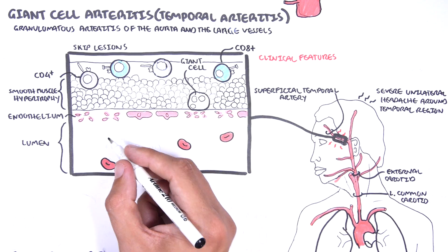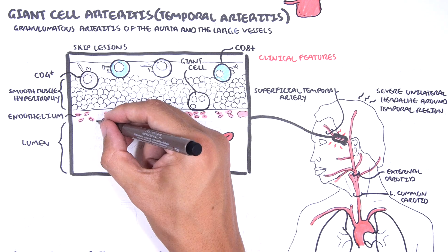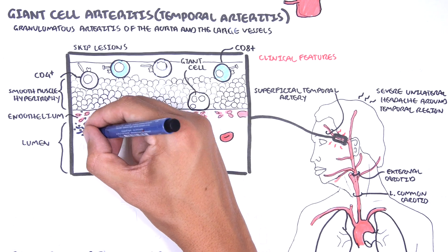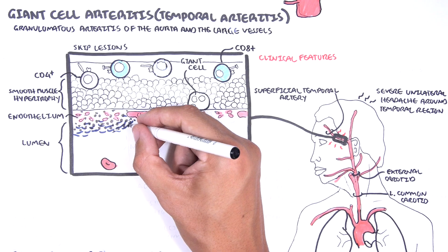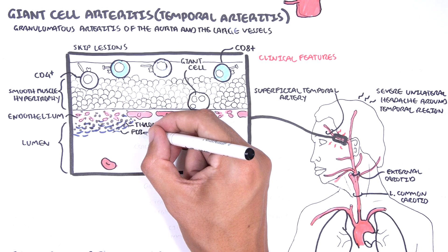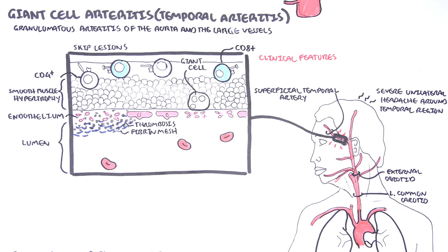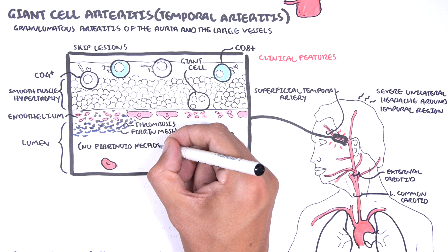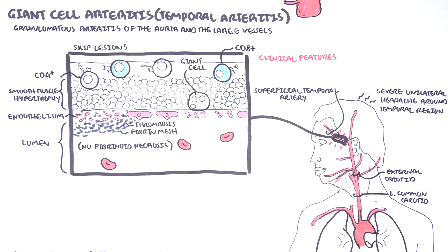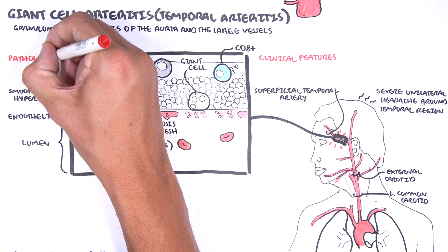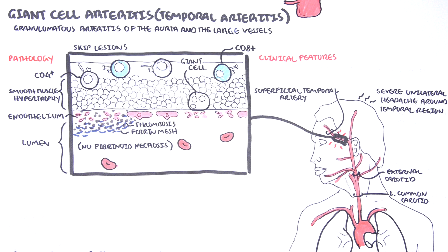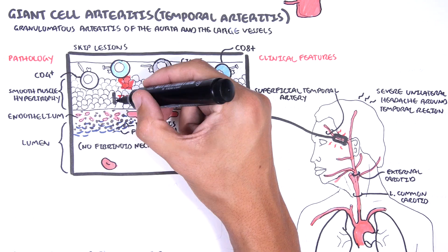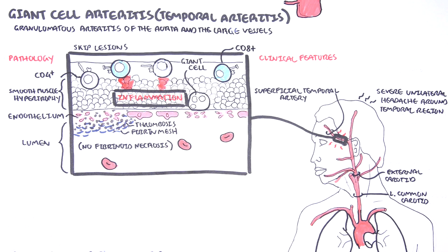When there is any potential injury to the blood vessel, especially to the endothelial layer, hemostasis occurs, which includes thrombosis and fibrin mesh. However, in giant cell arteritis, on histopathology, there is no evidence of fibrinoid necrosis. This is because fibrinoid necrosis is a histopathological term limited to small blood vessels. The T lymphocytes, macrophages, and giant cells contribute to the inflammatory process seen in giant cell arteritis.